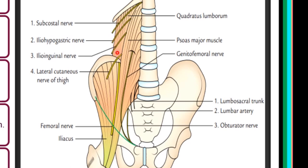From above downwards, we'll see the following nerves: topmost is the subcostal nerve, followed by the iliohypogastric nerve, then the ilioinguinal nerve, then the lateral cutaneous nerve of the thigh, and finally the femoral nerve. The upper four nerves — subcostal, iliohypogastric, ilioinguinal, and lateral cutaneous nerve of the thigh — all come out from the point above the iliac crest. The femoral nerve comes from the point below the iliac crest.